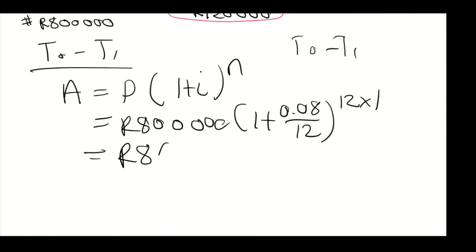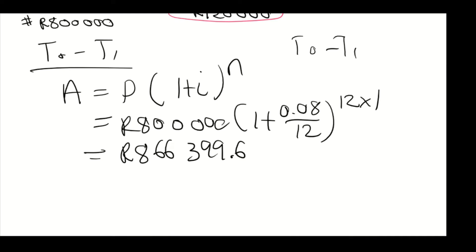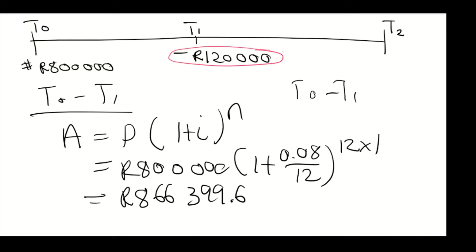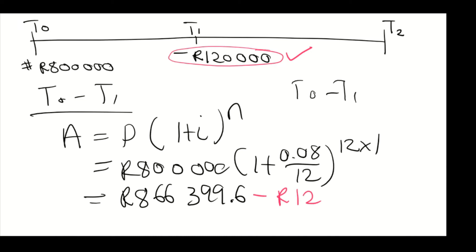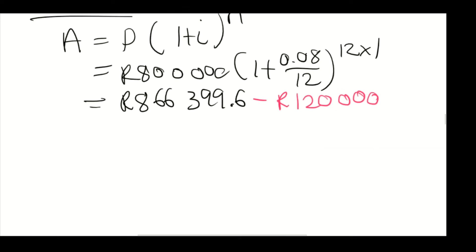The amount we get at t1 is 866,399.6. Remember that we have a withdrawal of 120,000 rand at t1, so we subtract 120,000 from the account. The amount remaining at t1 is therefore 746,399.6.